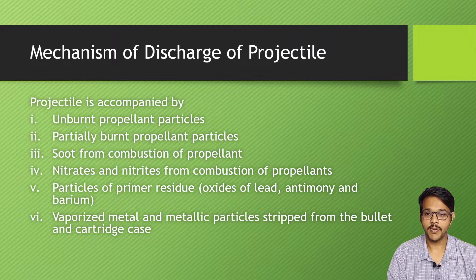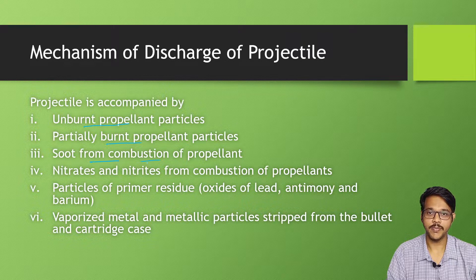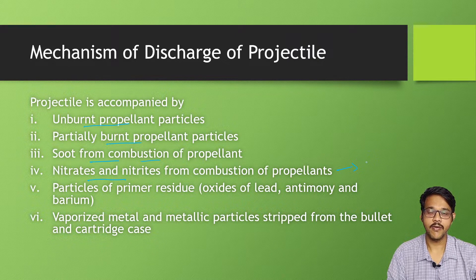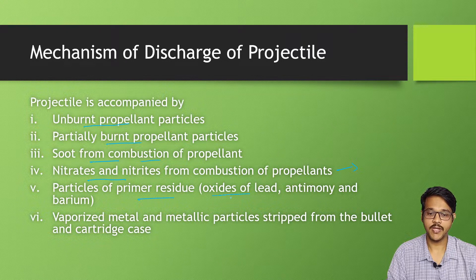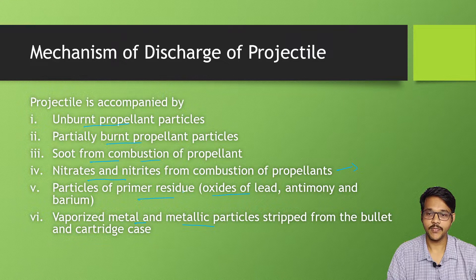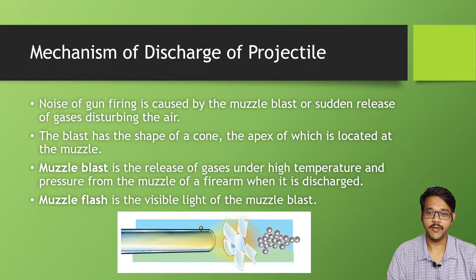Accompanying the projectile, there are sometimes unburnt propellant particles — unburnt gunpowder particles — and sometimes partially burnt propellant particles. Soot, which is burnt smoke, is also present. There are also nitrates from combustion of propellants, which is helpful for detecting residues on the hand of a person who fired a firearm. Particles of primer residues like oxides of lead, antimony, and barium are also seen, as well as vaporized metal or metallic particles stripped from the bullet and cartridge case.